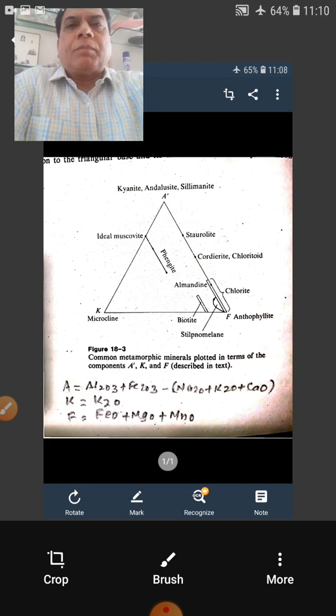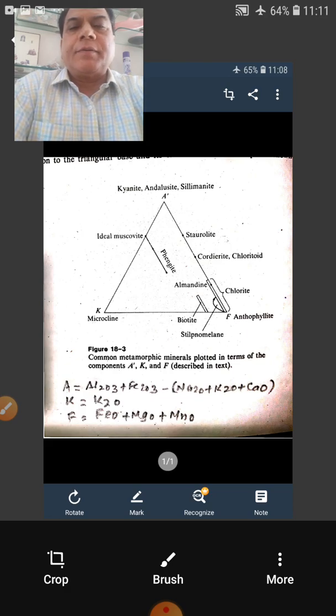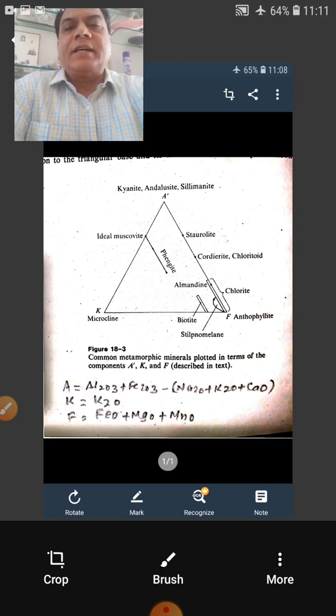Now the plotting of AKF diagram is similar to that of ACF diagram but AKF diagram is for pelitic rocks that are usually low in CaO, or you can say in the rocks if Al2O3 is greater than Na2O plus K2O plus CaO.